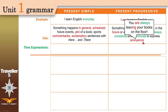We also use present progressive with 'always,' 'constantly,' and 'continually' to express annoyance — annoyance means something is bothering you, you're not happy. Like 'you're always leaving your books on the floor.' This happens in general, but we're expressing annoyance, so we use present progressive instead of present simple. You could also say 'you are constantly leaving your books.' Always, constantly, and continually all give the same meaning here.